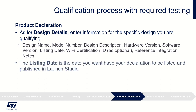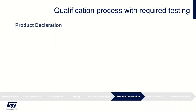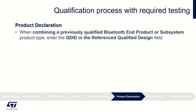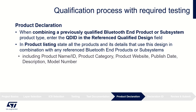Notice that the listing date is the date you want your declaration listed publicly in Launch Studio, limited to 90 days after you submit your project. For product declaration, if you are using or combining a previously qualified Bluetooth end product or subsystem product type with your new design, enter the QDID in the reference qualified design field. For product listing, list all products and product details that use this design, including product name, ID, product category, product website, publish date, description, and model number.